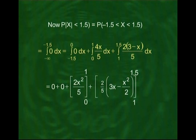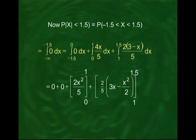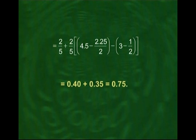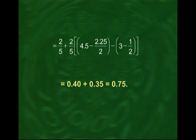So the probability that |x| < 1.5 equals the integral from −1.5 to 0 of 0, plus the integral from 0 to 1 of 4x/5, plus the integral from 1 to 1.5 of 2(3 − x)/5. Solving these integrals, the answer is 0.75. In other words, there is a 75% probability that for this particular density function, the random variable x lies somewhere between −1.5 and 1.5.